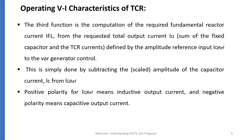The third function concerns the operating VI characteristics of TCR — the computation of required fundamental reactor current from the requested total output current Iq, defined by the amplitude reference input Iq_ref to the VAR generator control. This is done by subtracting the amplitude of the capacitor current IC from Iq reference. Positive polarity of Iq reference means inductive output current; negative polarity means capacitive output current.